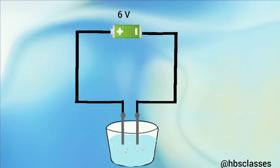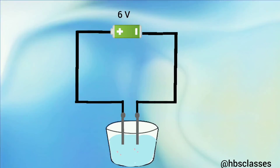After a few minutes, we will see that bubbles of gases are produced at the two carbon electrodes. The formation of gas bubbles at the two electrodes shows that a chemical change has taken place in water on passing electric current through it. The gas evolved at the cathode is hydrogen, and that at the anode is oxygen. This activity shows that hydrogen and oxygen gases evolve on the electrolysis of water.